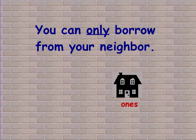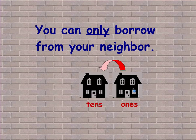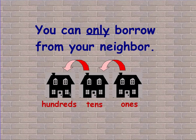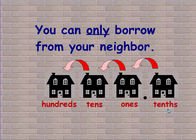You can only borrow from your neighbor. So the ones place value can only borrow from the tens place value. And the tens can only borrow from the hundreds. And if there's a decimal point, it can only borrow from the place value directly in front of it.